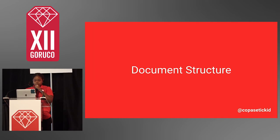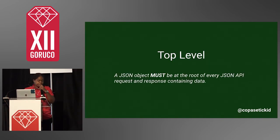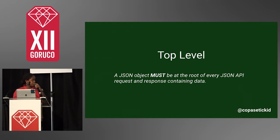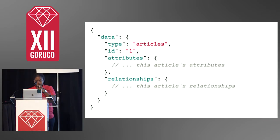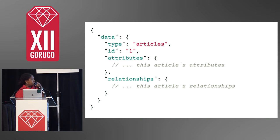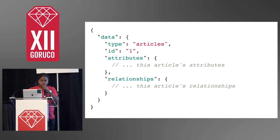In the document structure, essentially a JSON object is going to be at every root of what you're sending or receiving, containing the keyword 'data'. From there you get your top-level items — data, errors, and meta — not always coming back at the same time. This is an example of that structure, where everything comes back in the data, and the type specifies the model resource, then IDs and attributes.